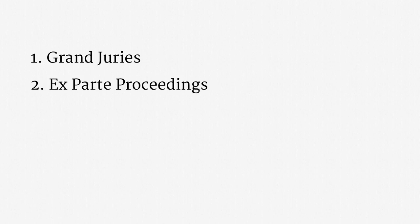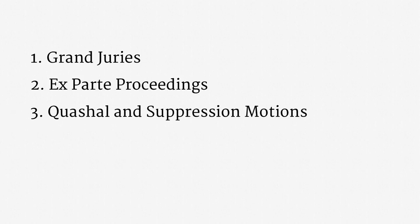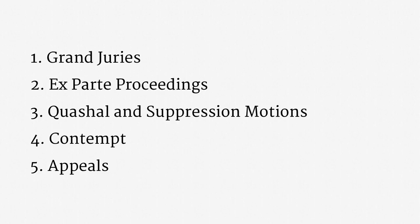There are five topics on deck for this lecture. First, grand juries — these bodies are an unusual feature of the American legal system and possess important investigative powers. Second, ex parte hearings, where government agents can get judicial permission for surveillance. Third, quashal and suppression motions, important legal vehicles for challenging a particular instance of surveillance. Fourth, judicial contempt, which deals with how courts enforce their orders. Last, appeals — we'll work through what can be appealed, the timing of appeals, and the hierarchy of American courts.